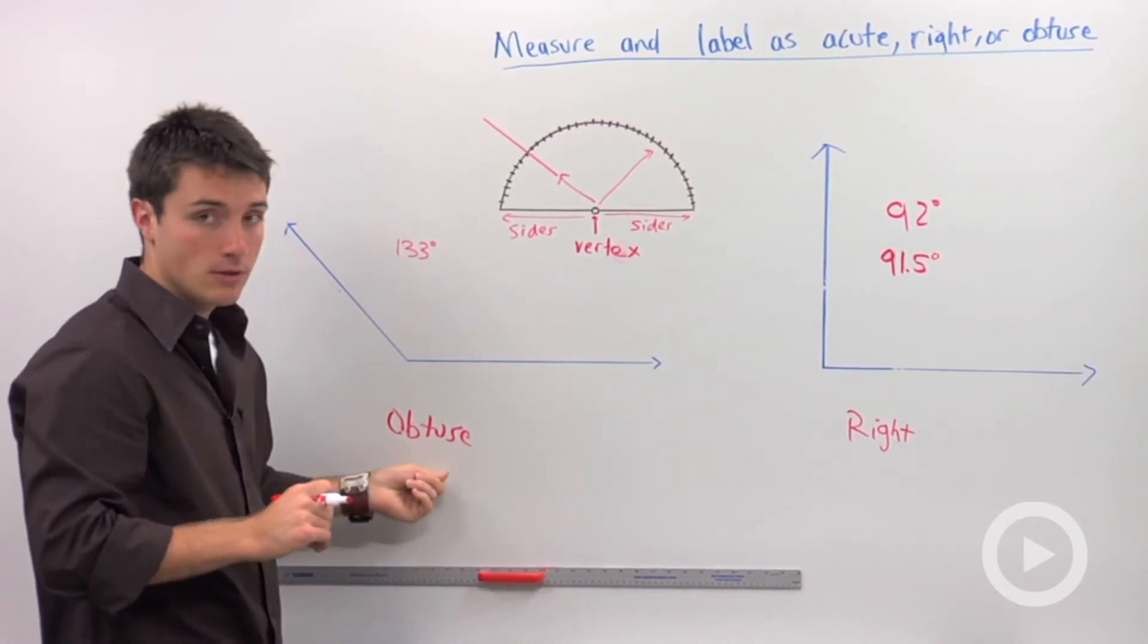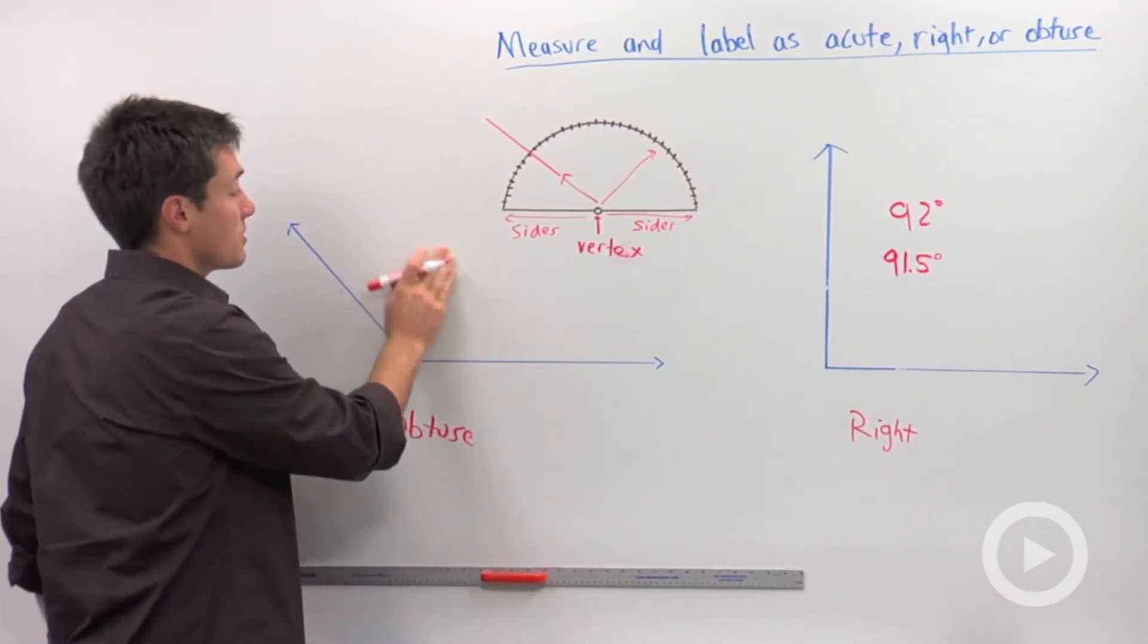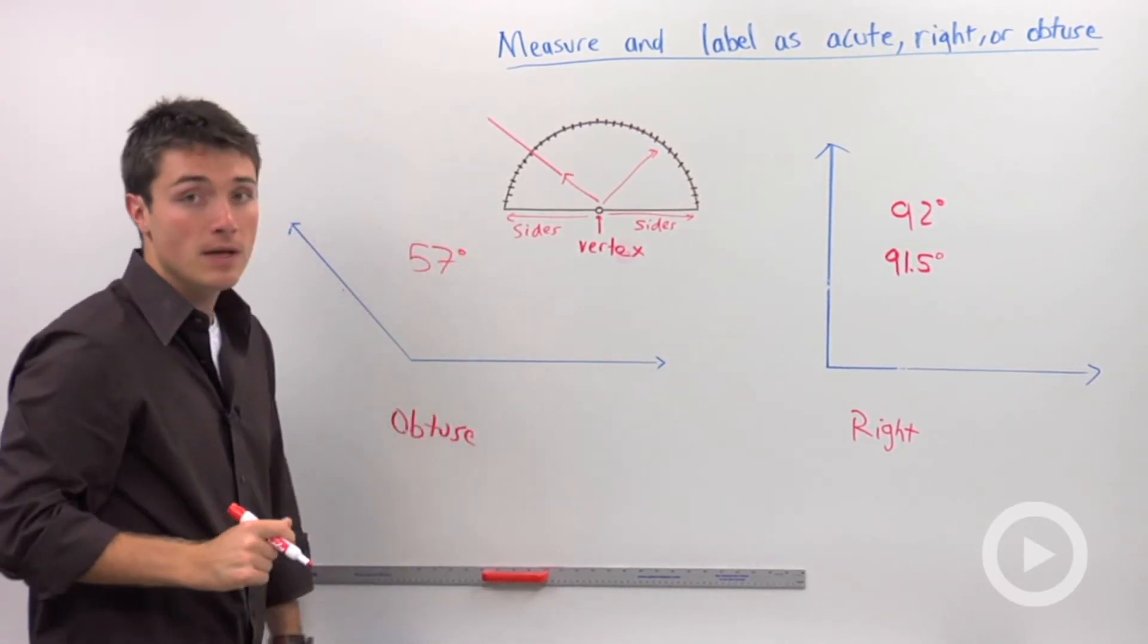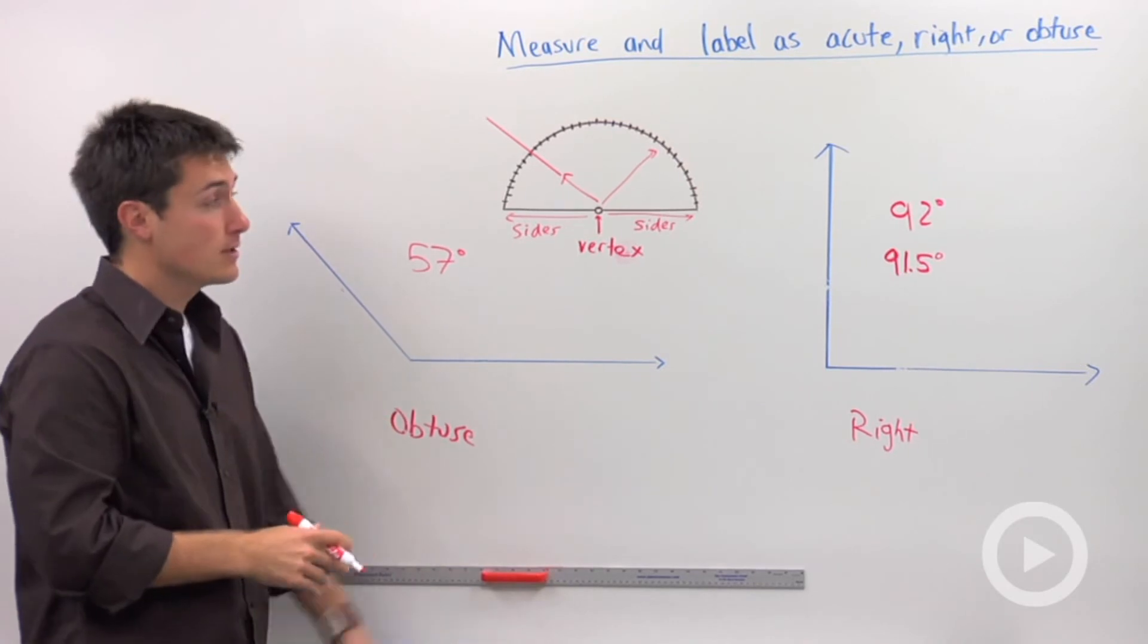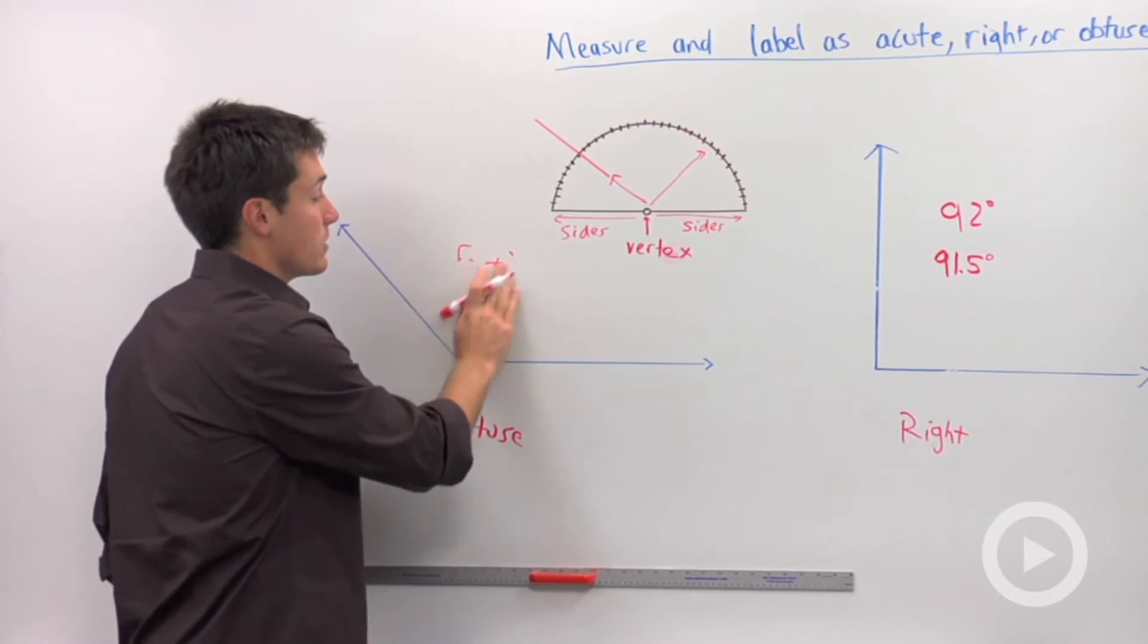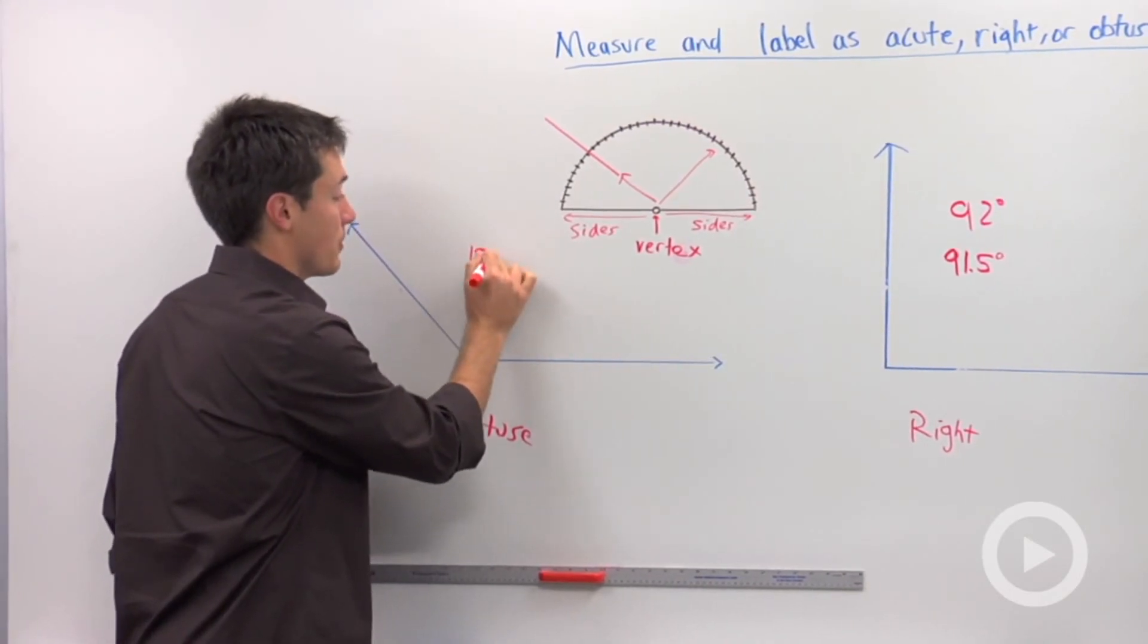If you were shown this problem on a quiz, and you said that is 57 degrees, I'm going to say that's wrong because although the marking might have been correct, you didn't recognize this as obtuse, and this should have been 133 degrees.